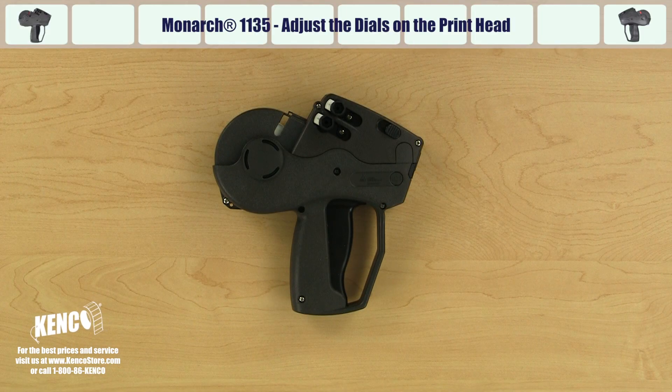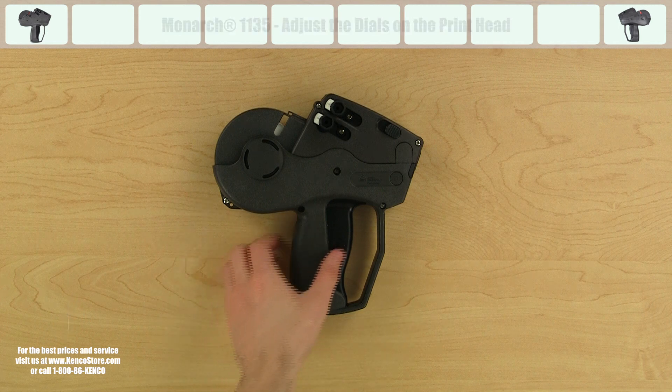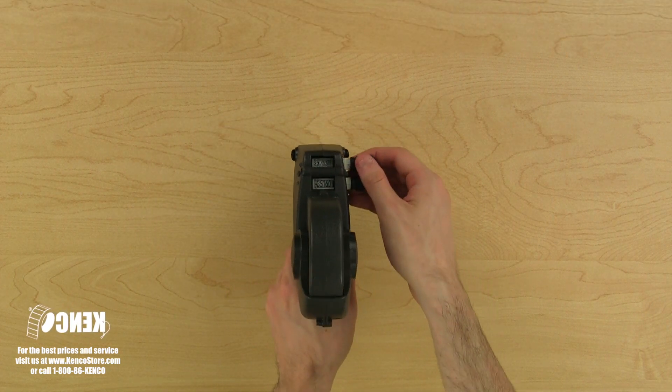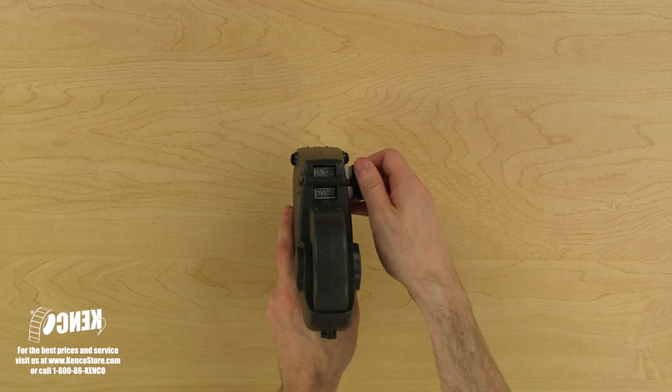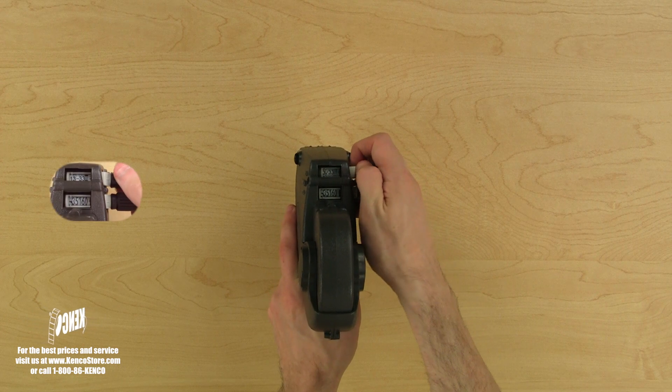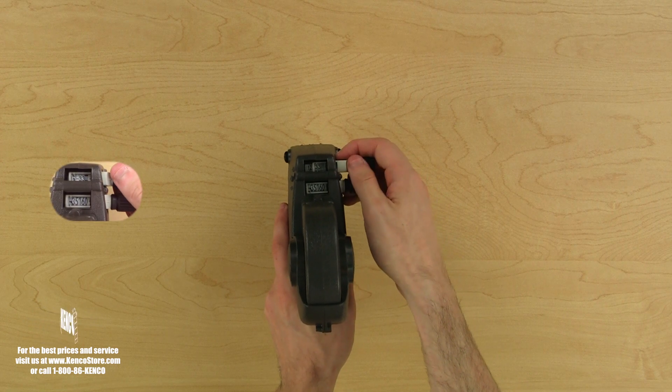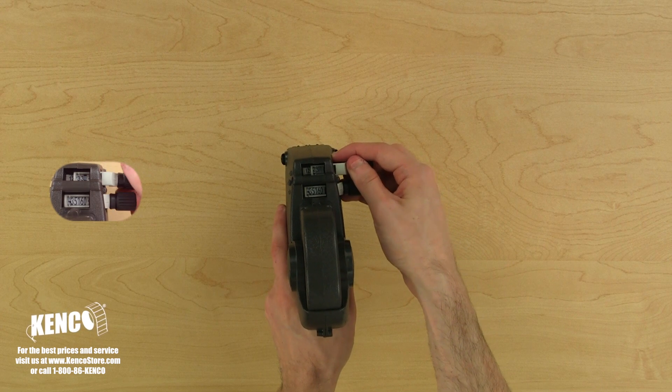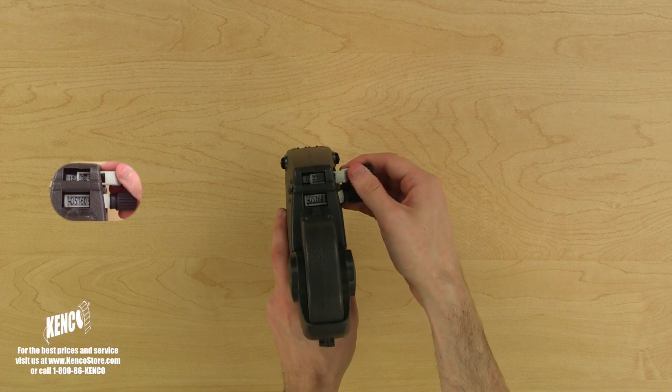Now I'm going to show you how to adjust the dials on the print head. With the top part of the gun facing you we'll use our left hand to hold the gun and our right hand to grab the top adjustment dial. Let's change the bands to our desired price by turning the adjustment dial. To move to the next set of digits simply pull the adjustment dial and the adjustment indicator will follow you to the digit you are currently adjusting.